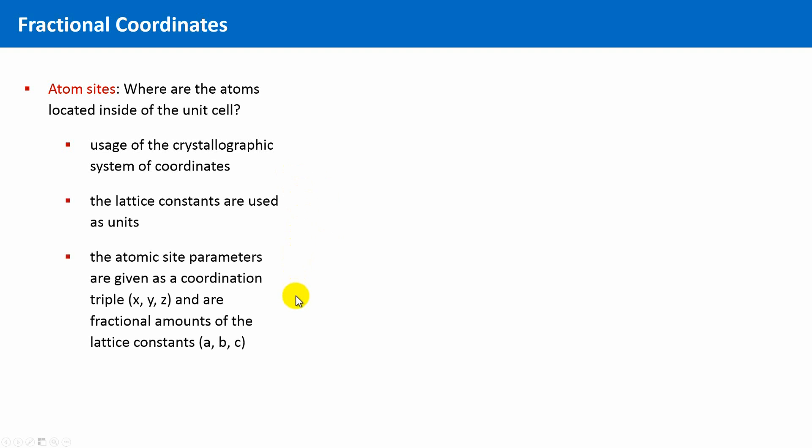The atomic site parameters are then given as a coordination triple x, y, z, and these coordination values are fractional amounts of the lattice constants a, b and c.